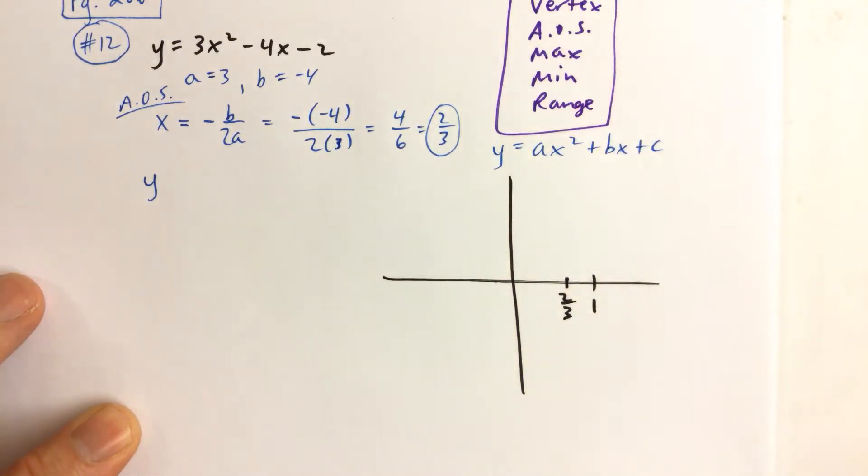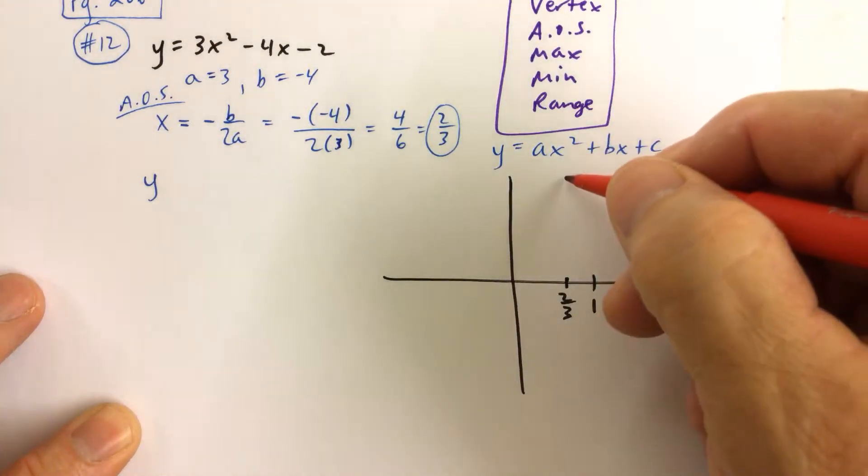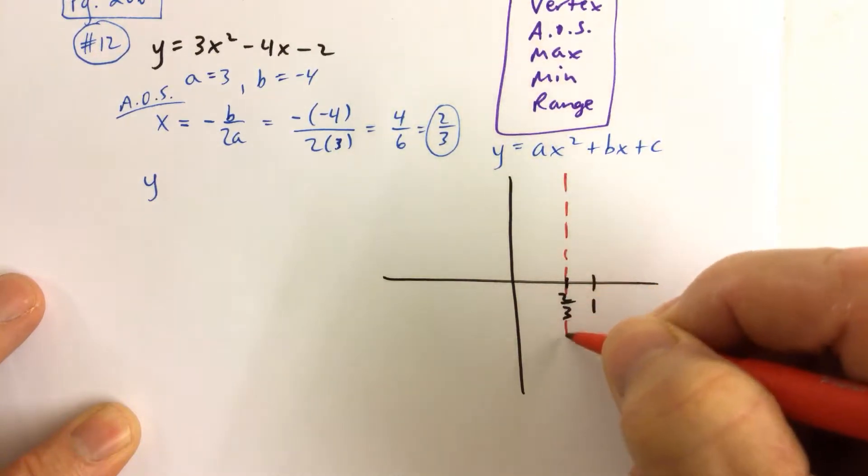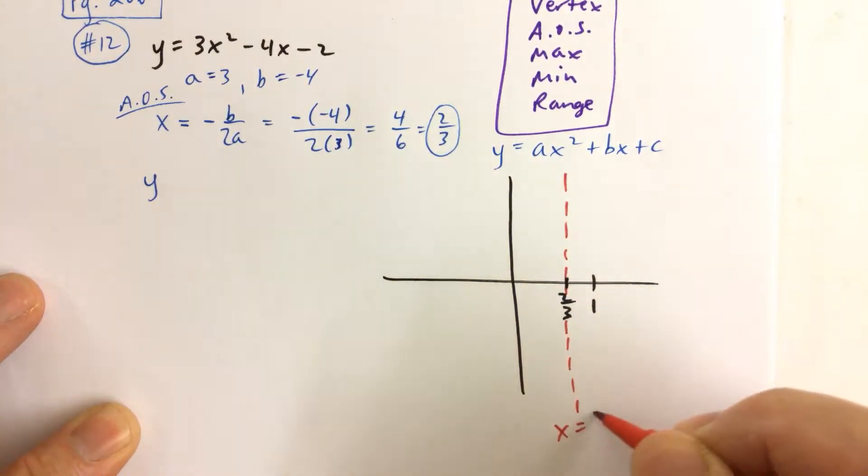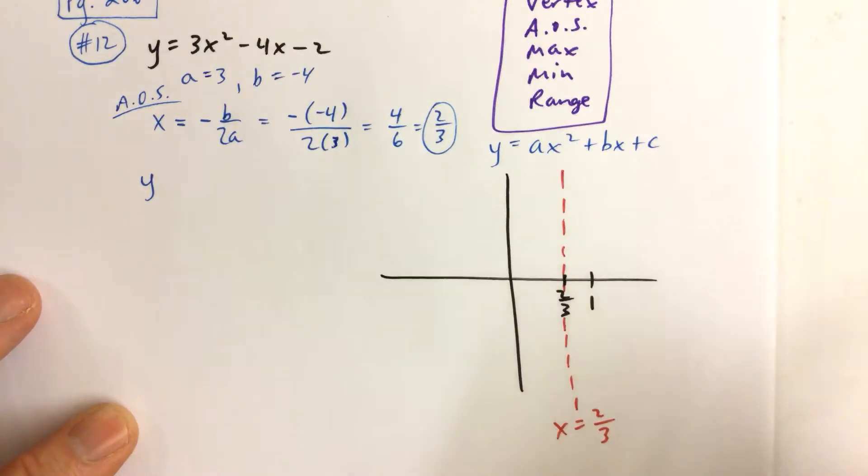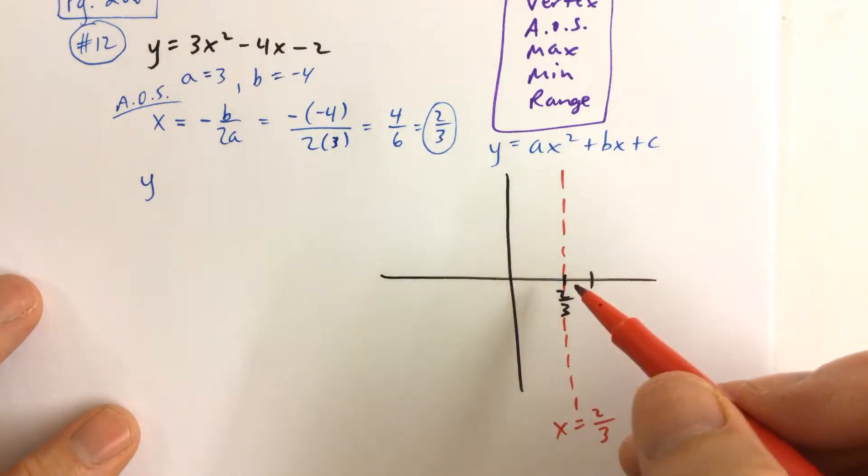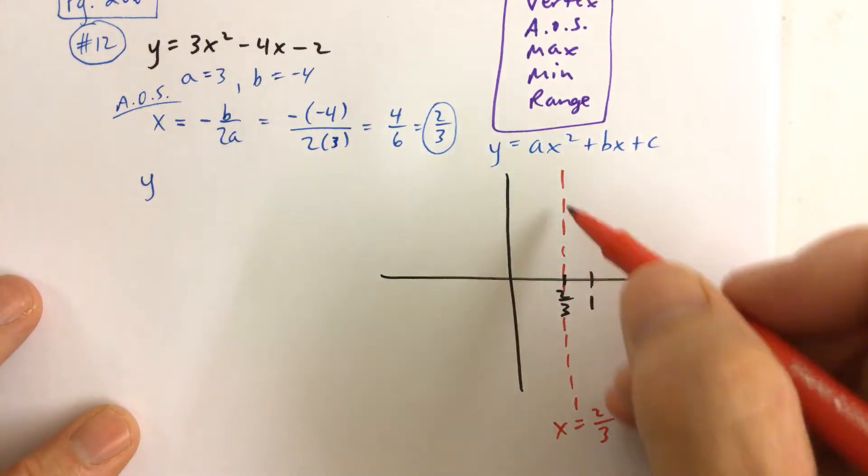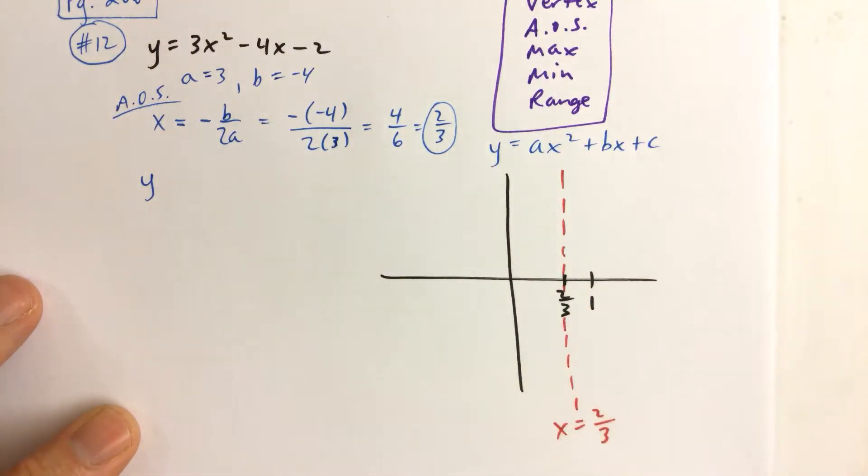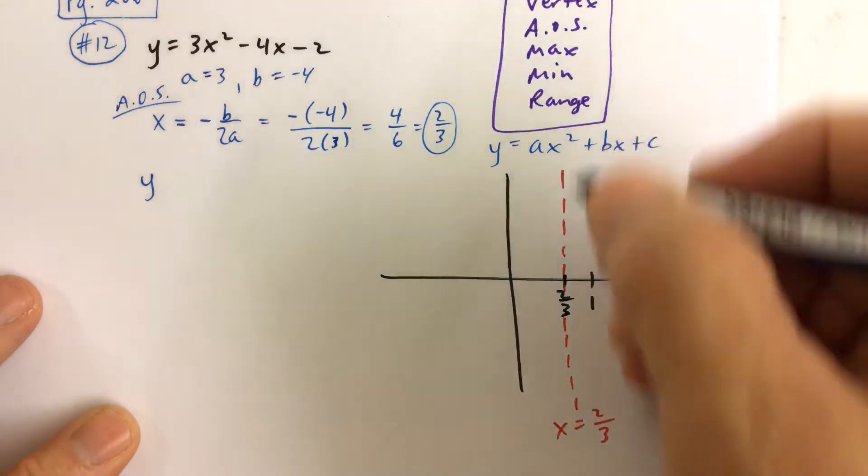And the line x equals 2 thirds is the line, like I said, that intersects the vertex. So all we have to do is find the y-coordinate, and we'll plot the y-coordinate of the vertex somewhere on that vertical line.